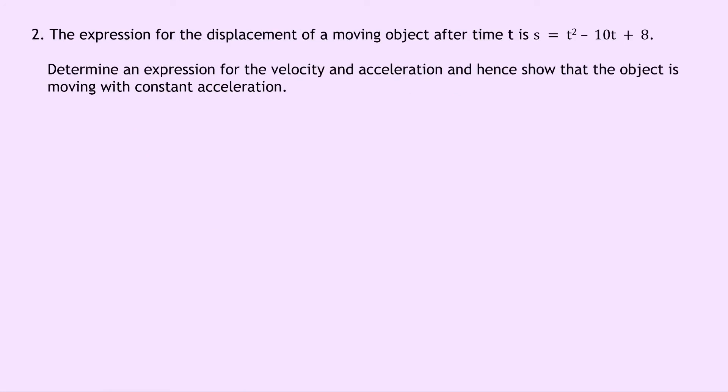Question 2 says that the expression for the displacement of a moving object after time t is s equals t squared minus 10t plus 8. Determine an expression for the velocity and acceleration and hence show that the object is moving with constant acceleration. So if we firstly write down our expression s equals t squared minus 10t plus 8. To get the expression for the velocity first of all we need to differentiate s with respect to time. So we get v equals ds by dt equals 2t minus 10.